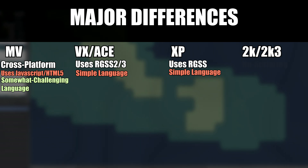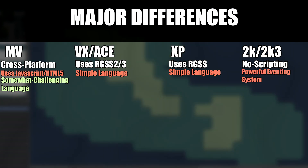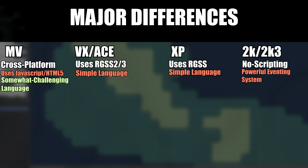2000 and 2003 do not have any form of scripting whatsoever; however, the eventing system is vastly superior to that of any other RPG Maker out there. Through eventing with RPG Maker 2000 and 2003, you can do so many really cool things. You can do custom battle systems, custom menu systems, even custom title screens — you name it, it can be done in RPG Maker 2003 with just eventing alone.